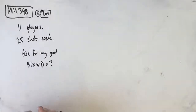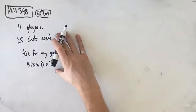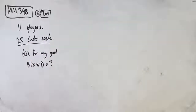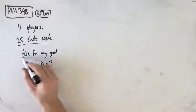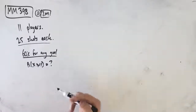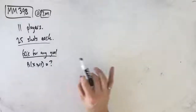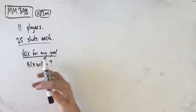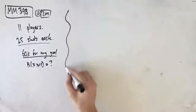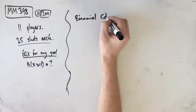First things first is to recognize what kind of probability we're dealing with here, and the answer is binomial. Whenever we have multiple trials — in this case 25 trials — and each trial has the same probability of success, which it does because we have 60% for any goal, that's when we have binomial distribution. Another thing to recognize is that each trial is independent of the previous trial, so whether he gets it in or not doesn't affect the next shot. We need to use our binomial CDF calculator in our CAS.